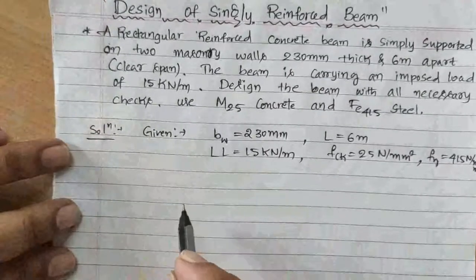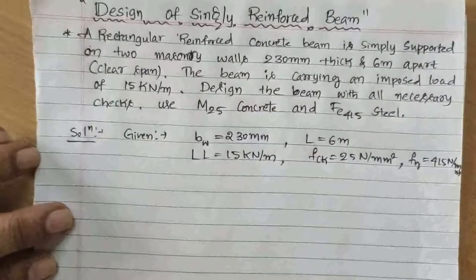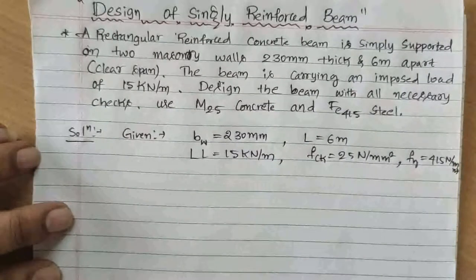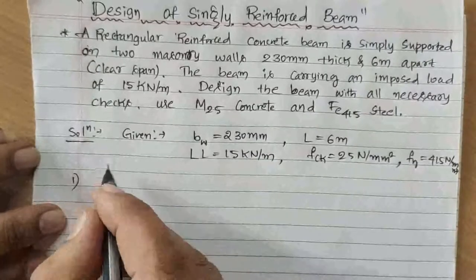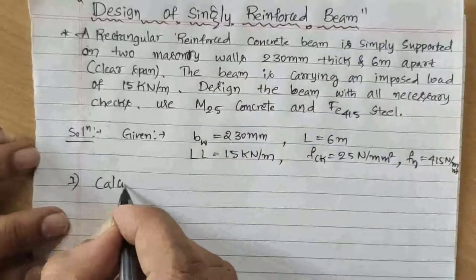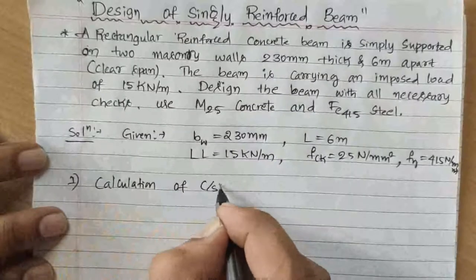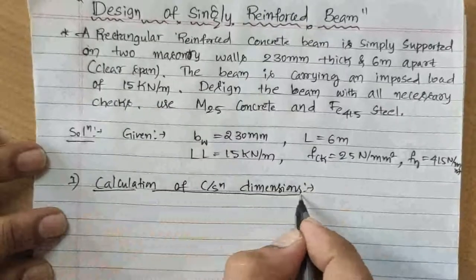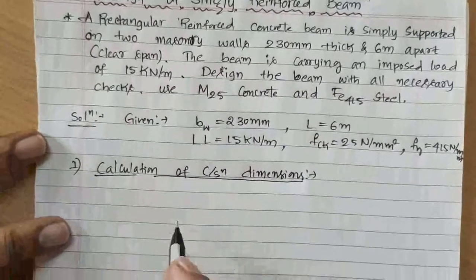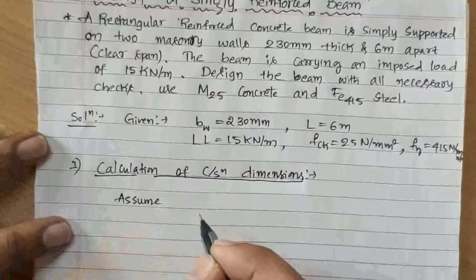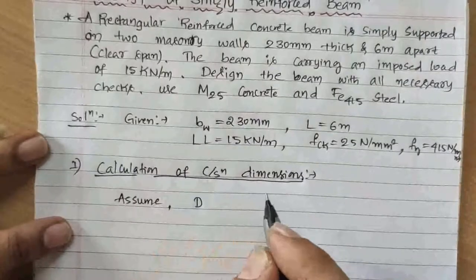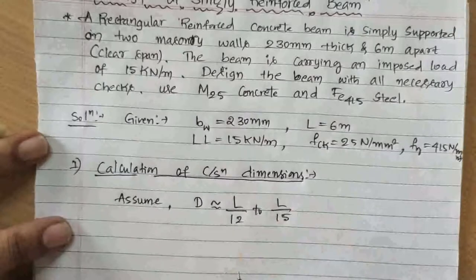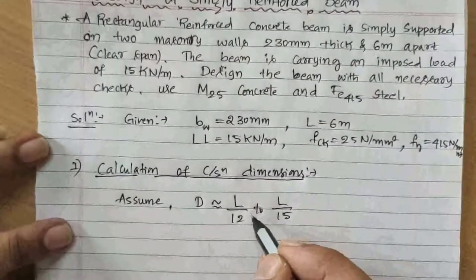The first step is calculation of cross-sectional dimensions. We need to assume the overall depth D and the width b, then calculate the effective length. For a simply supported beam, overall depth D is assumed in the range of L/12 to L/15, and width b is assumed in the range of D/2 to D/3.